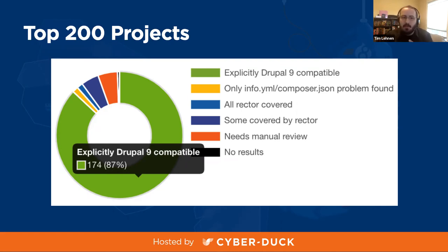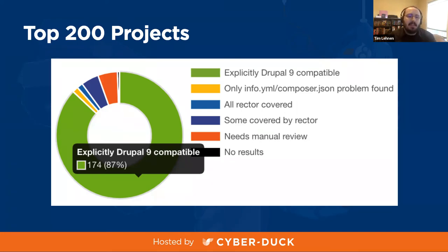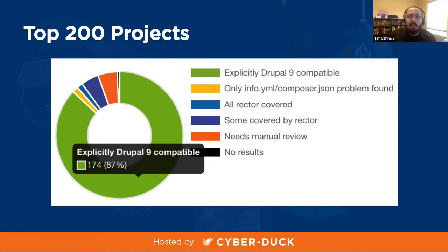This snapshot was taken on the day of Drupal 9's release, showing that the top 200 most used contributed modules were already 87% compatible with Drupal 9. That's already up to maybe 97% today. These top 200 projects cover probably 95% of the site use cases out there. So if you're thinking it's going to be a while before modules are ready for Drupal 9, that's probably not the case — many of them are ready today.